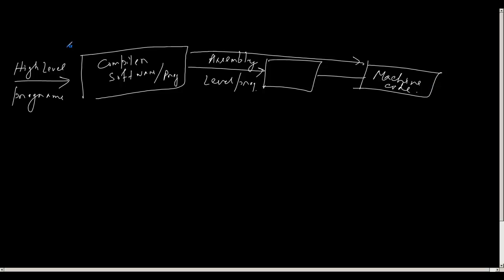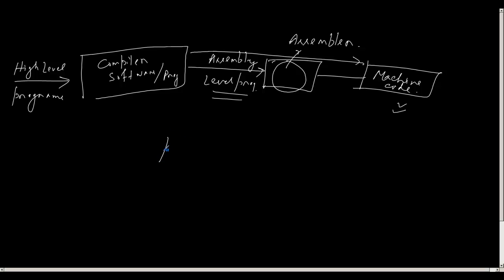Now, if I have an assembly level program and I want to generate machine code, this intermediate block is also a specific kind of compiler and it has a name called an assembler. An assembler is another kind of compiler that takes an assembly level program as input and generates the machine code or object code.